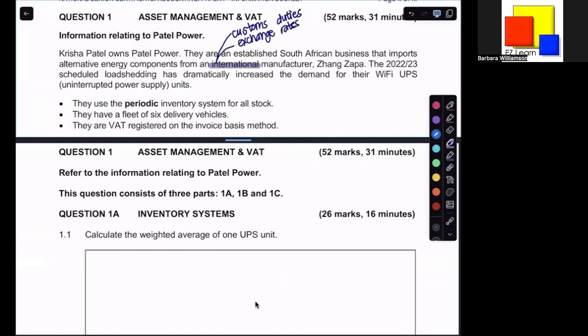The 2022-2023 scheduled load shedding has dramatically increased the demand for their Wi-Fi UPS or uninterrupted power supply units. They use the periodic inventory system for all of their stock. Remember that the periodic inventory system means that inventory bought is recorded as an expense purchases, and then cost of sales would simply be calculated at the end of the year using opening and closing stock.